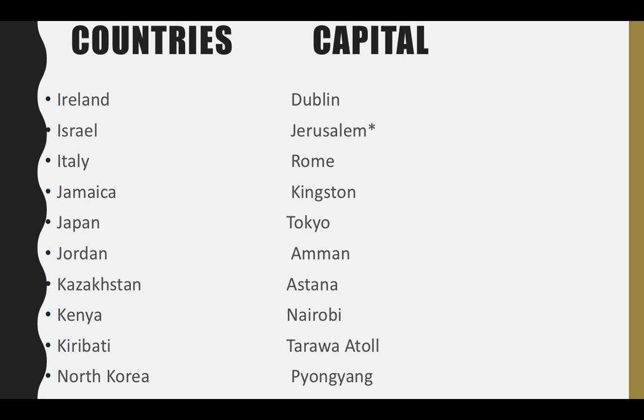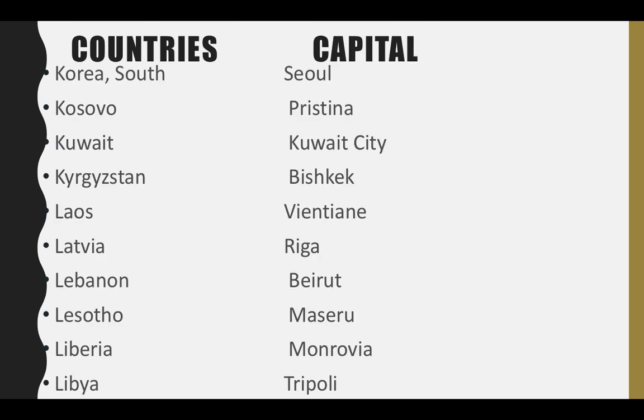Ireland — its capital is Dublin. Israel — its capital is Jerusalem. Italy — its capital is Rome. Jamaica — its capital is Kingston. Japan — its capital is Tokyo. Jordan — its capital is Amman. Kazakhstan — its capital is Astana. Kenya — its capital is Nairobi. Kiribati — its capital is Tarawa Atoll. North Korea — its capital is Pyongyang.